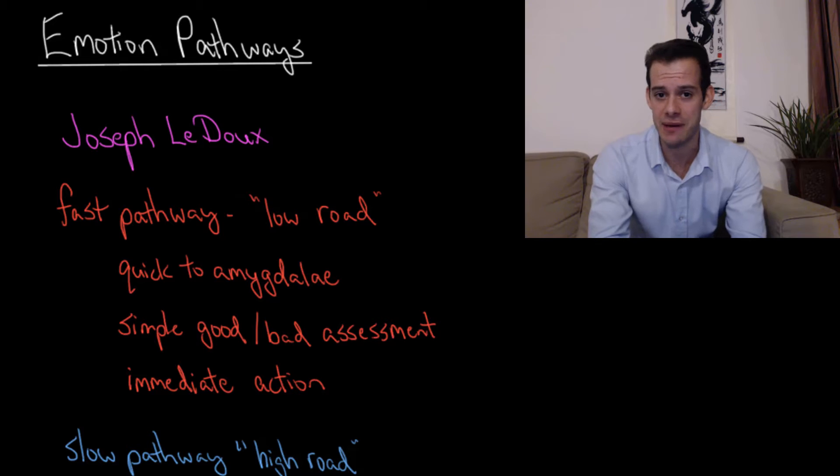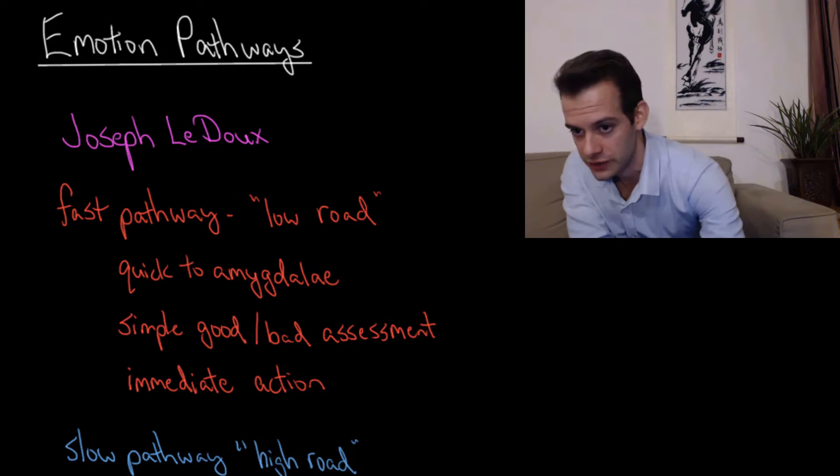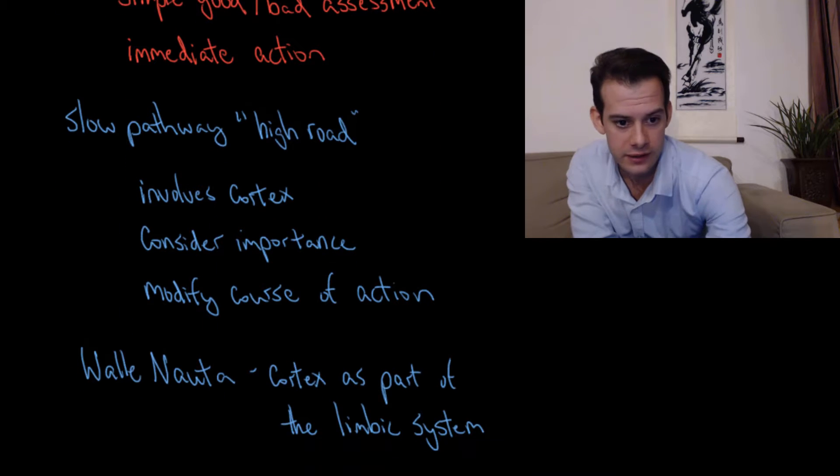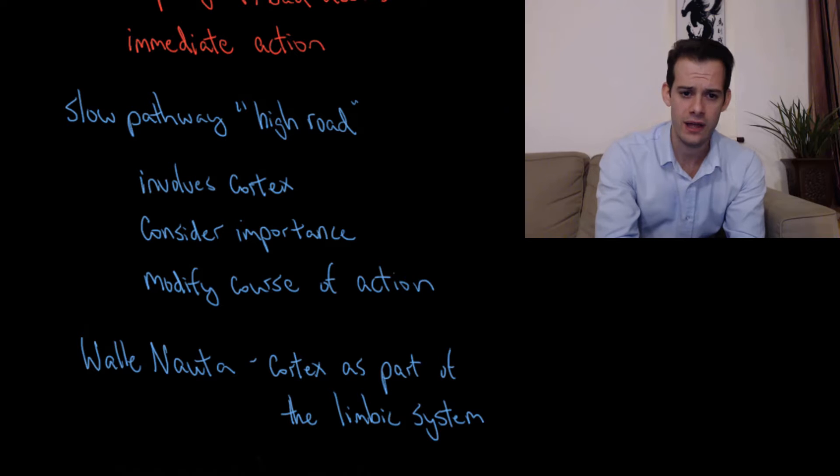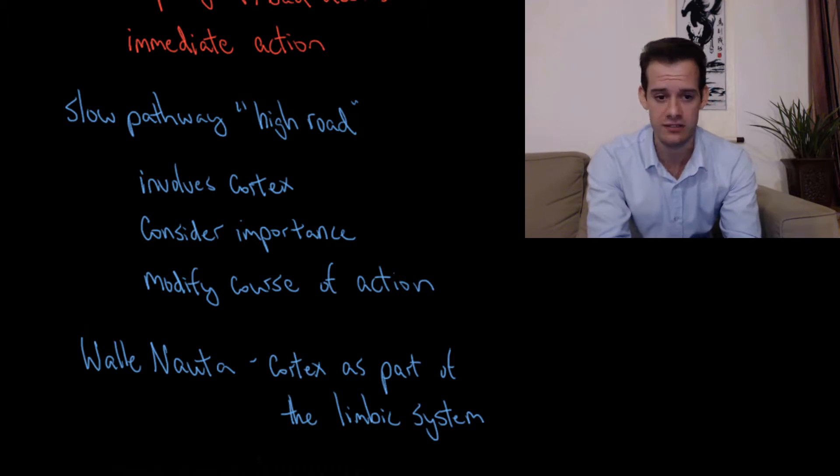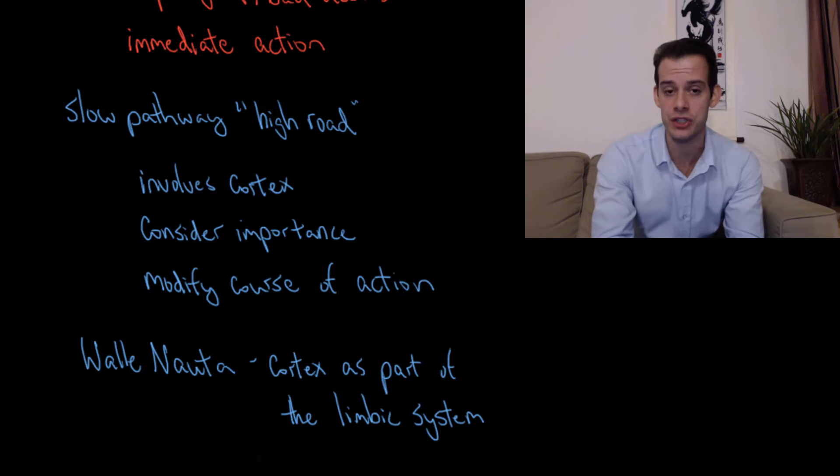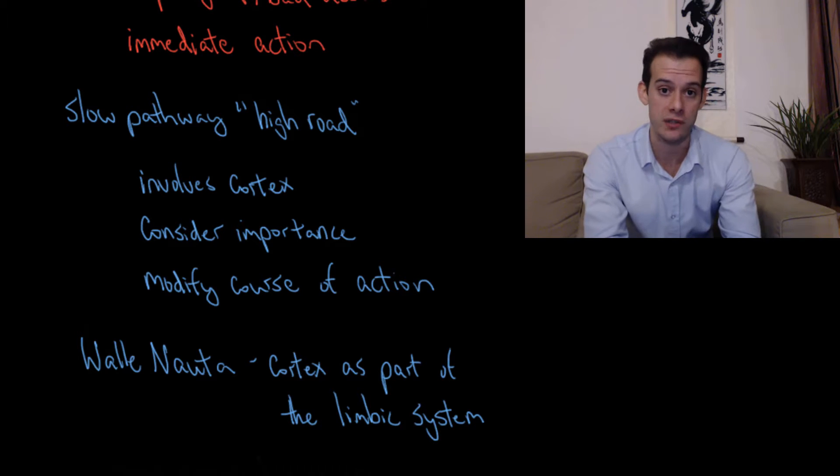But simultaneously, the information is also traveling on the slow pathway. And so the slow pathway, or the high road, also involves areas of the cortex. And so this allows us to have more detailed processing. And so we can consider the importance of this stimulus, and then based on this more detailed processing, we might decide that we should modify our course of action, because in many cases we've already responded to the stimulus because of the fast pathway. But we then might decide that we need to change our course of action if our simple assessment wasn't quite right.